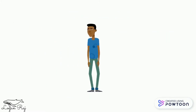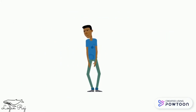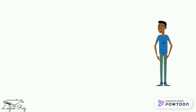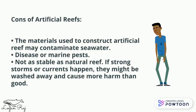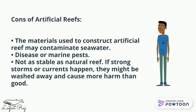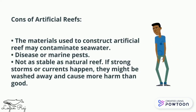However, the use of artificial reef structures has several downsides. The materials used to construct artificial reefs may contaminate seawater. As an example, ships which are commonly used as artificial reefs have residue oil and grease, and this may cause disease or marine pests. Besides that, it is not as stable as a natural reef. If strong storms or currents occur, they might be washed away and cause more harm than good.